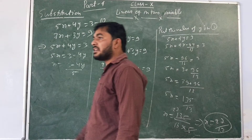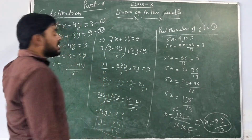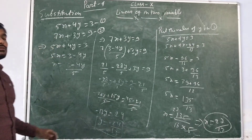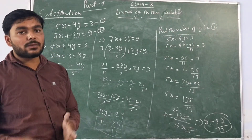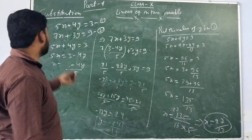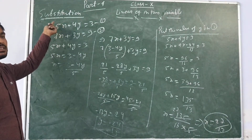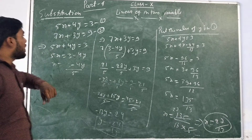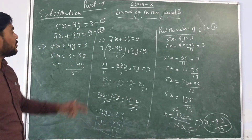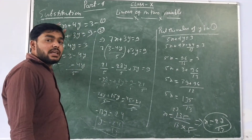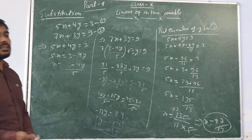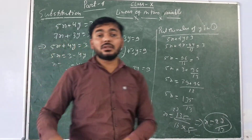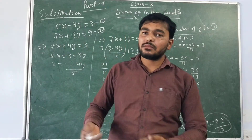To recap: in the substitution method, from one of the equations you calculate the value of x or y in terms of the other variable. If calculating x, it will be in terms of y; if calculating y, it will be in terms of x. You calculate the value of one variable in terms of the other.